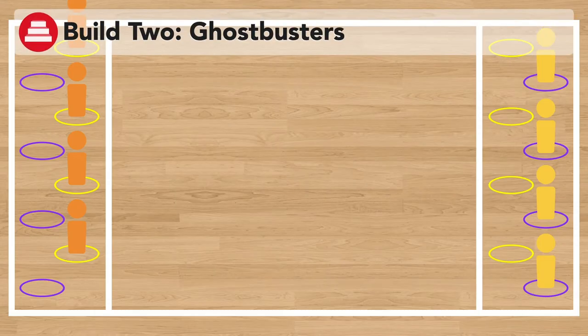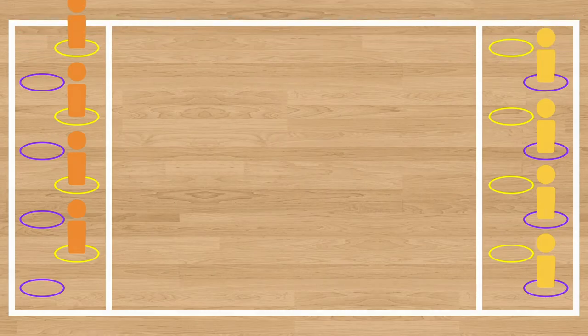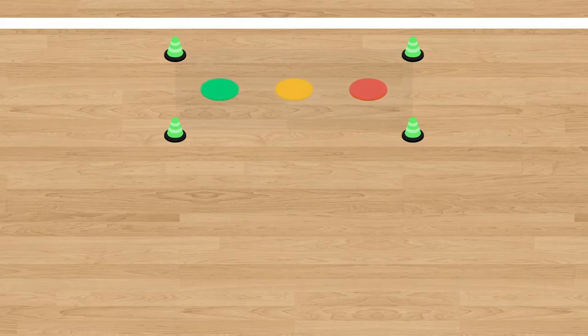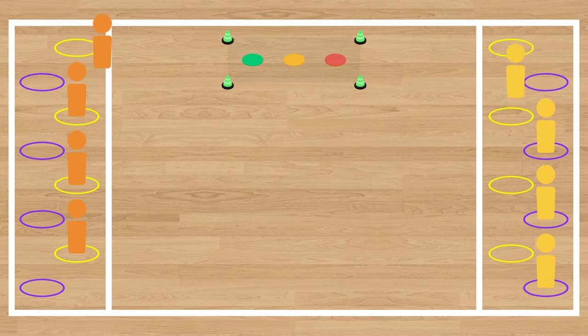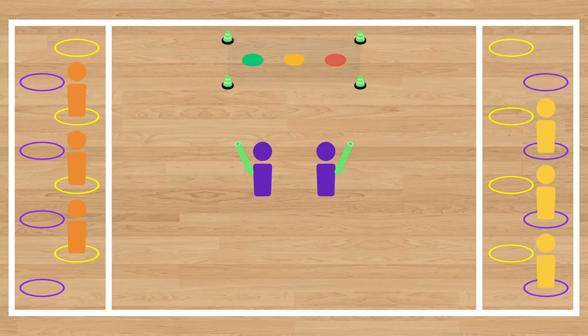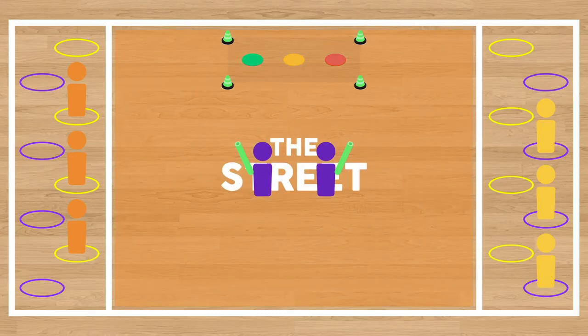For build 2, the teacher will set up an ecto containment unit on the side of the street. They do so by creating a rectangle of cones and lining up a set of green, yellow, and red spots within the cones. The teacher will then select a few students to be ghostbusters. Each ghostbuster will receive a proton pack, which is a full size pool noodle. The ghostbusters role is to tag ghosts and ghouls to send them to the ecto containment unit. They do so by gently tagging the fleeing players with their pool noodles. Ghostbusters can only tag ghosts and ghouls on the street. When a fleeing player is in a haunted house, they are on base and safe from being tagged.